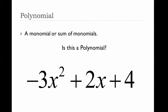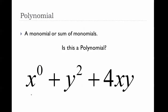How about this one? Yes, this is a polynomial — it's a trinomial. Each piece is a monomial. Last example: x to the zero plus y squared plus 4xy. Yes, it is a polynomial. X to the zero is a monomial — zero is a whole number, and anything to the zero power equals one, which is just a number. Y squared is a monomial with a whole number exponent. And 4xy is a monomial. So yes, this is an acceptable polynomial.